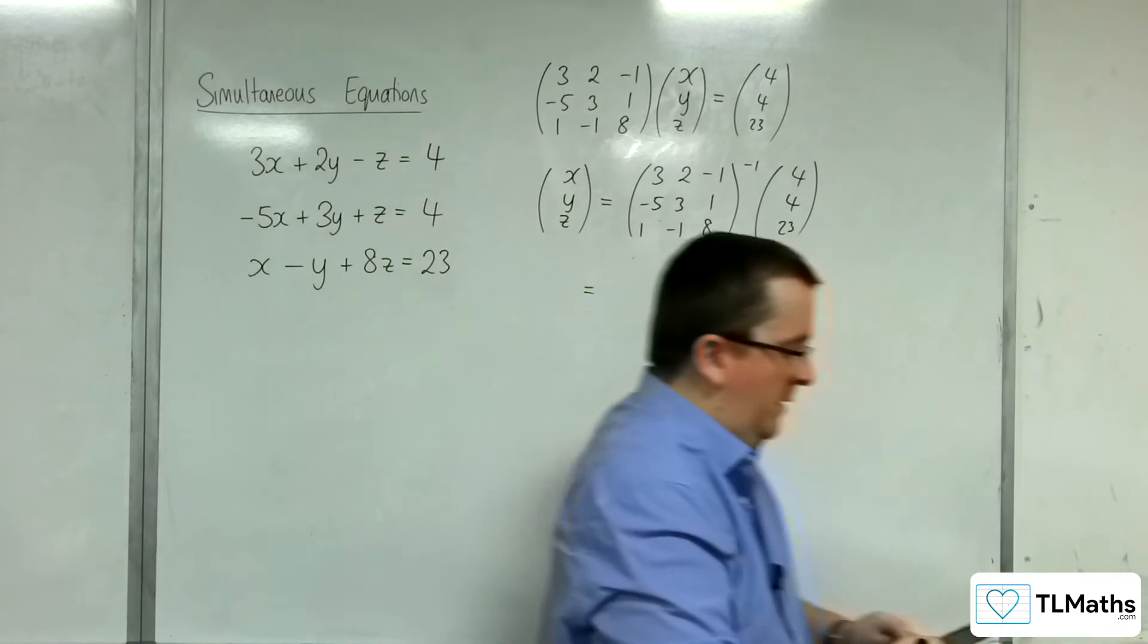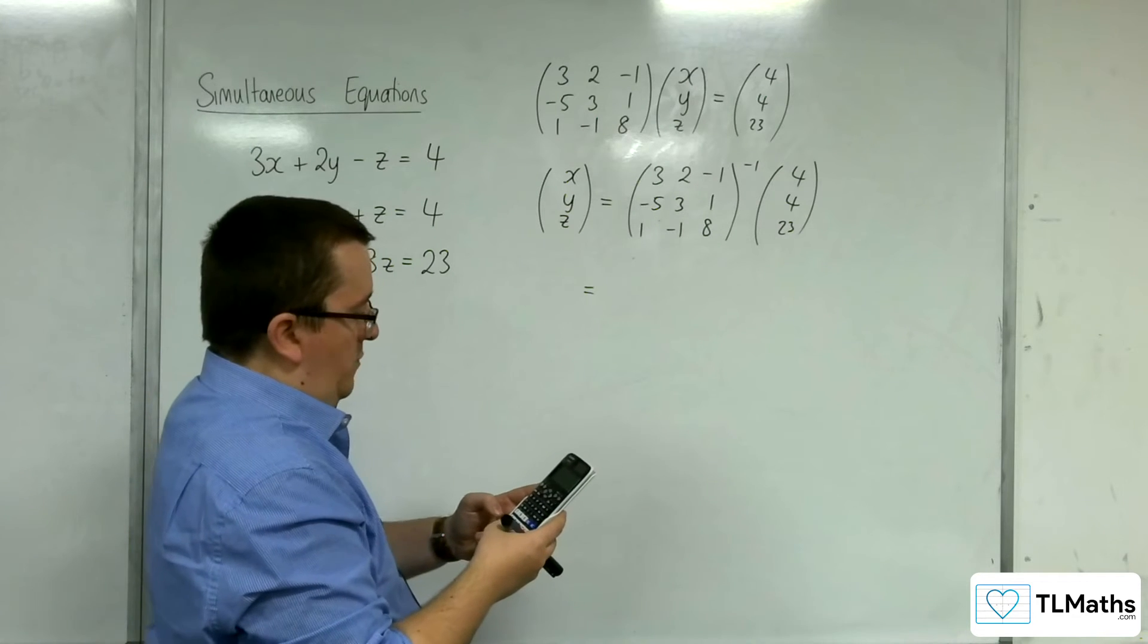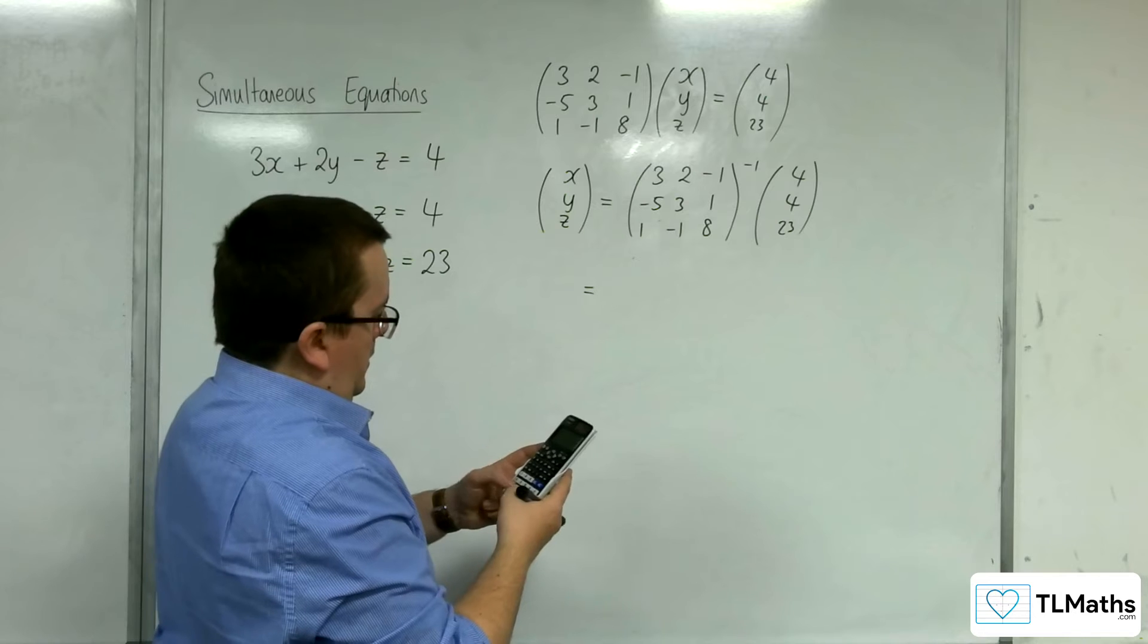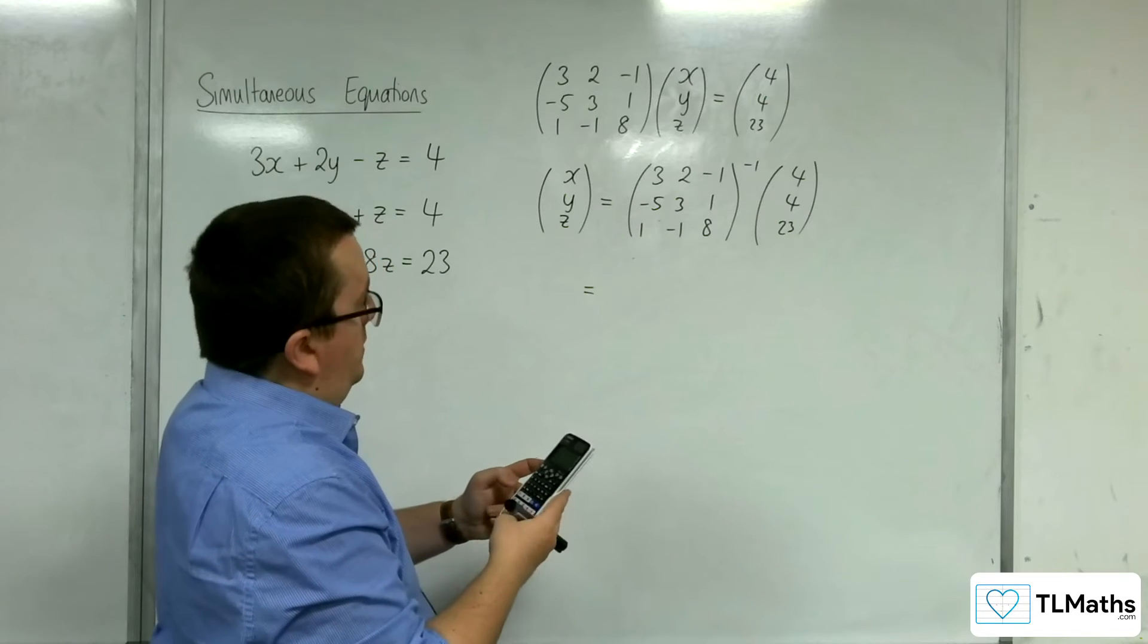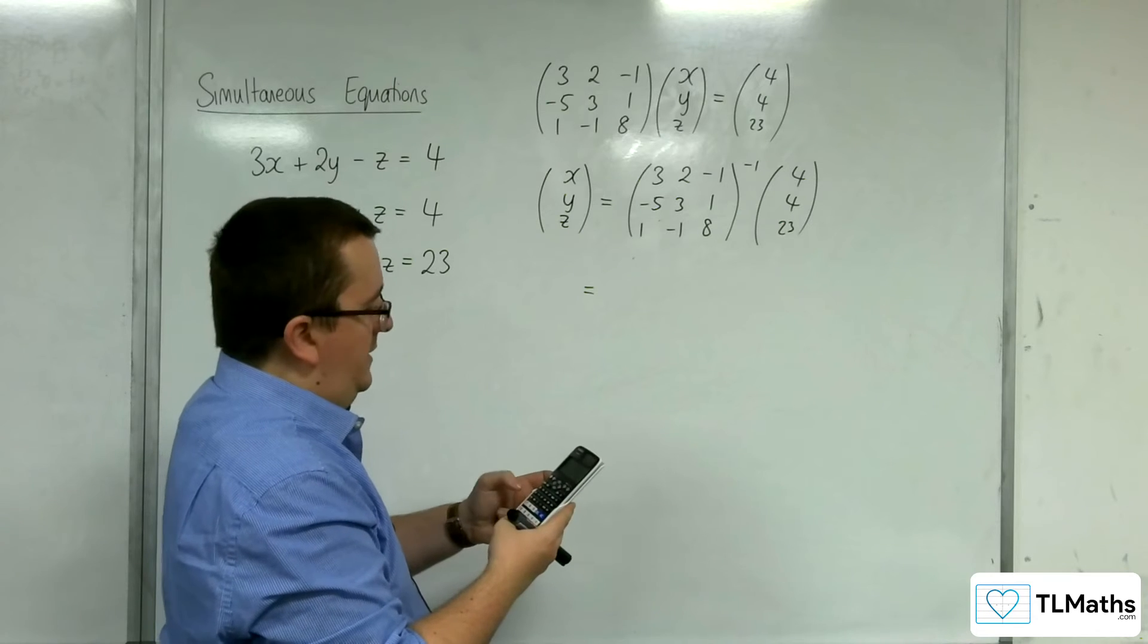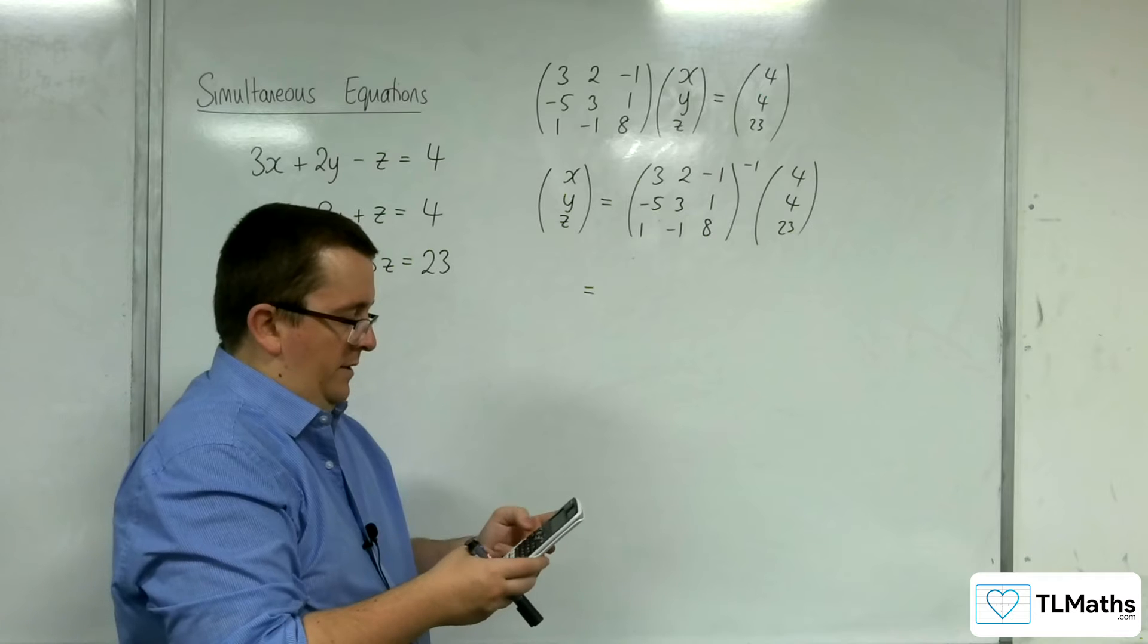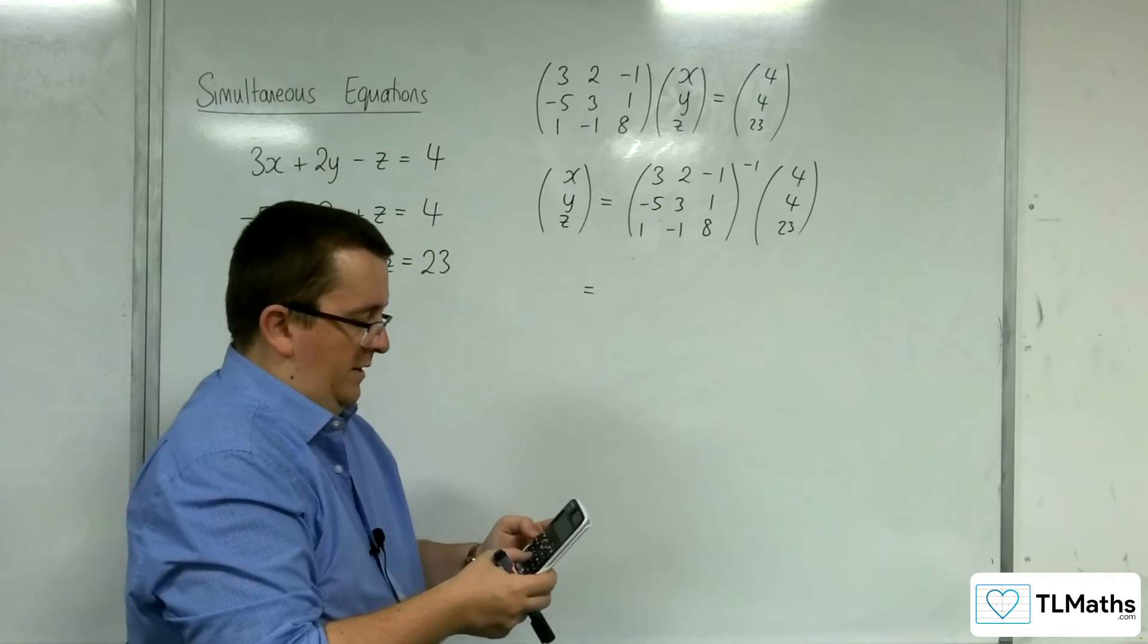OK. So, on my calculator, I'm going to go to matrix. Define matrix A as three rows, three columns: 3, 2, negative 1, negative 5, 3, 1, 1, minus 1, 8. So, let's see what that looks like. Matrix A to the minus 1.